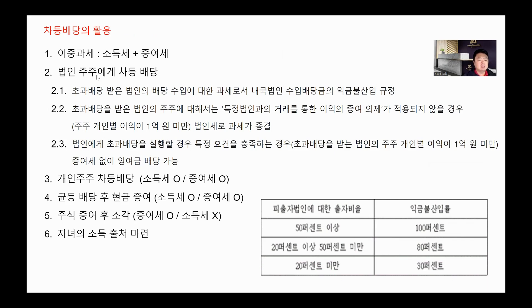만약에 이렇게 할 수는 있겠어요. 법인을 하나 설립해서 예를 들어 자녀가 둘이다 그러면 자녀 두 분이 25%, 25%, 그 다음에 배우자 50%, 어쨌든 세 명이서 30%, 30%, 40% 하든지 신설법인을 설립하는 거죠.